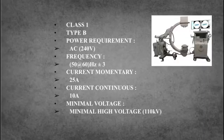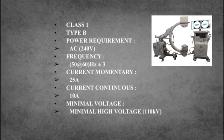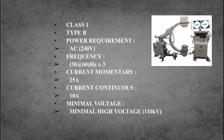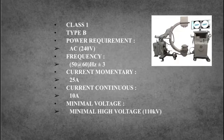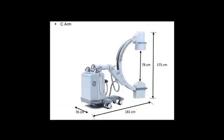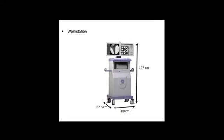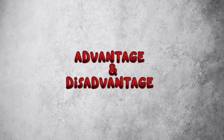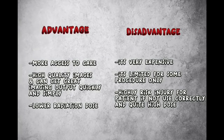Let me introduce the specification for this system device. This device is in class 1 and has type B. For power requirement, we use AC 240 volts and frequency at 50 or 60 hertz plus or minus 3 hertz. For the current, we use 25 ampere and current continuous 10 ampere. Lastly, for the x-ray tube, the minimum high voltage is 110 kV.